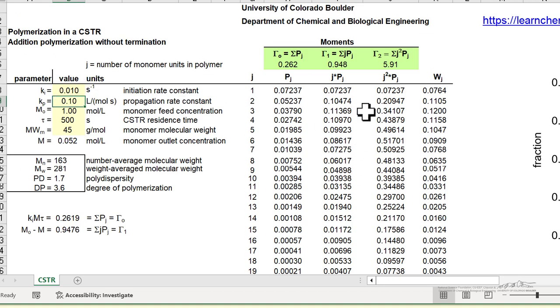As we change these parameters, those values will change. The idea is you can change these parameters to get an idea of how they affect the polymerization and molecular weight distribution.